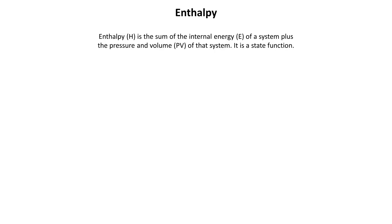Beginning with our definition of what enthalpy is. Enthalpy, which we represent with a capital H, is the sum of the internal energy, represented by a capital E, of a system plus the pressure and volume of that system. It is important to remember that enthalpy is a state function — that means it is completely independent of its path.